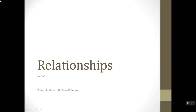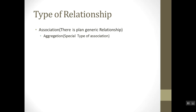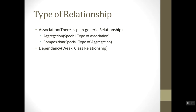Hi, this is Fizan. Today we are discussing relationships and their types. A relationship is an association between classes. We will discuss in detail in coming slides. Types of relationships include: associations, which are further divided into aggregation and composition, as well as dependency.